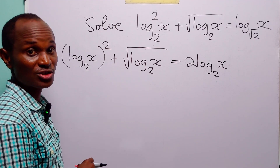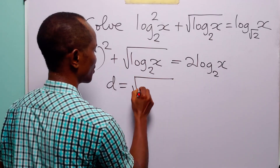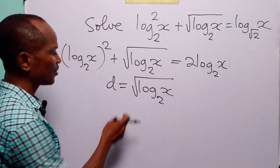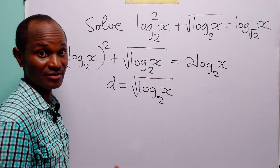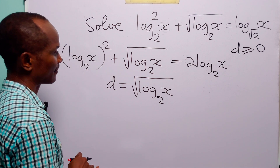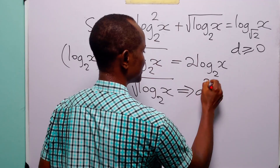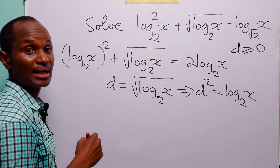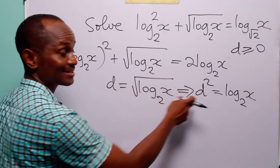The next step to solving this equation is to do a substitution. Let d be equal to the square root of log to base 2 of x. This comes with the condition that d must be greater than or equal to 0, since a square root must be positive. When we square both sides, we have that d squared is equal to log to base 2 of x. We will now rewrite this equation in terms of d and d squared.